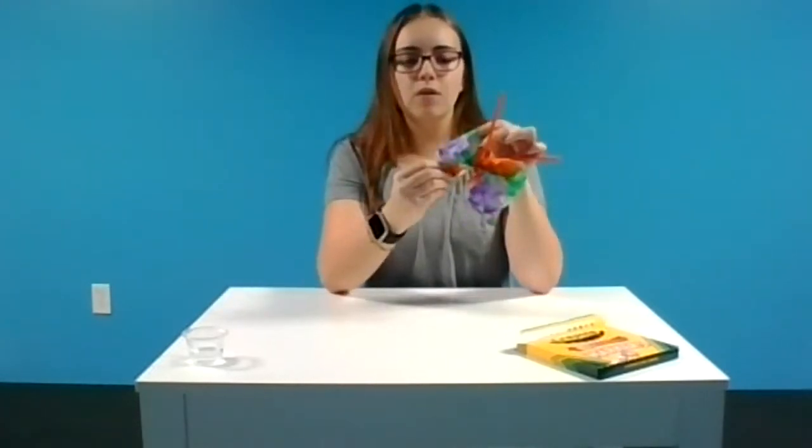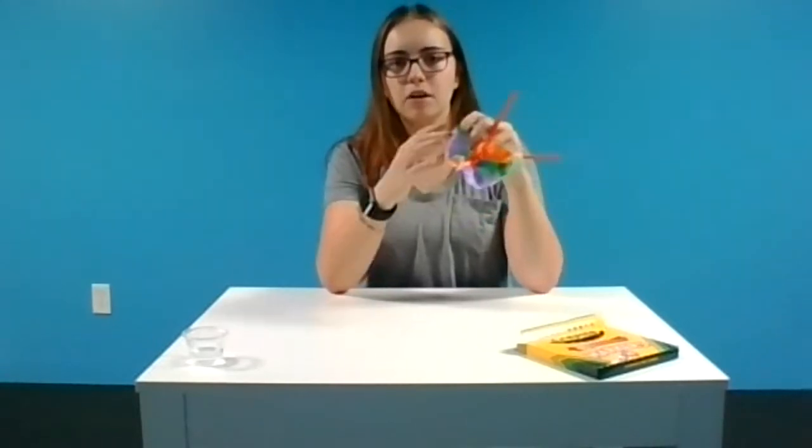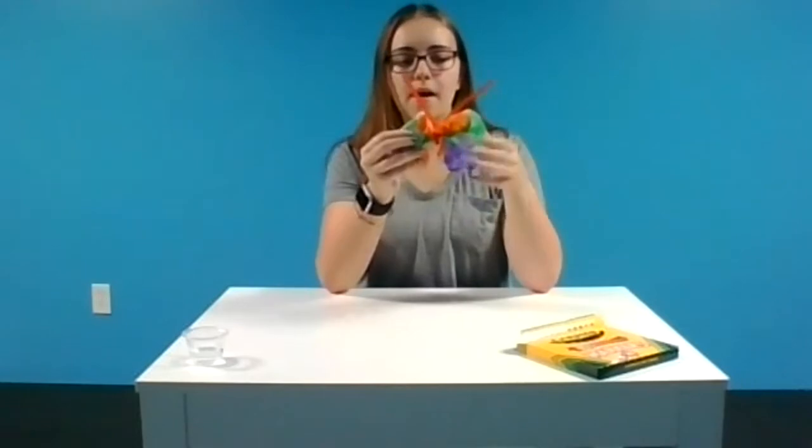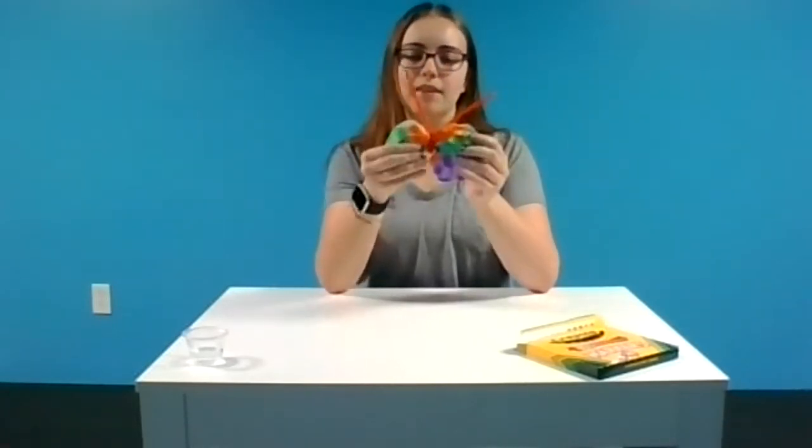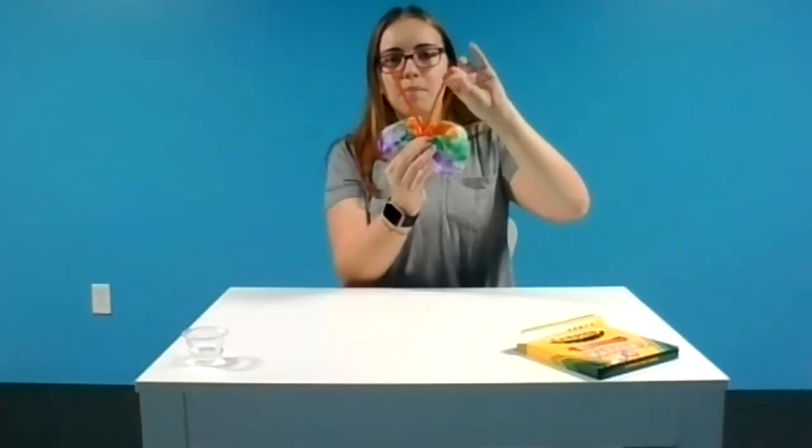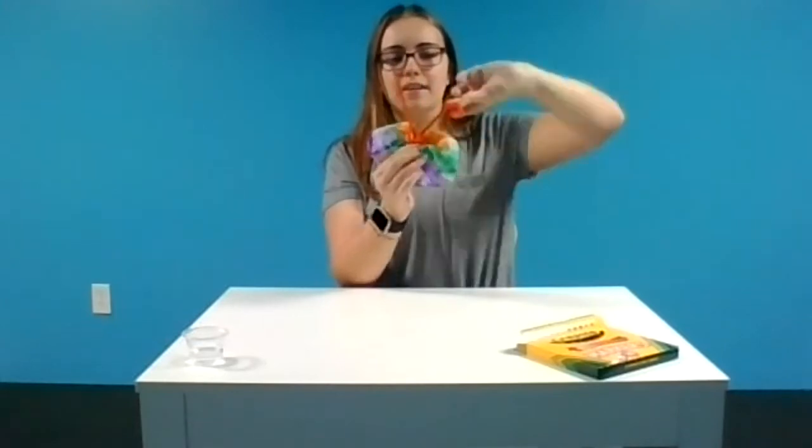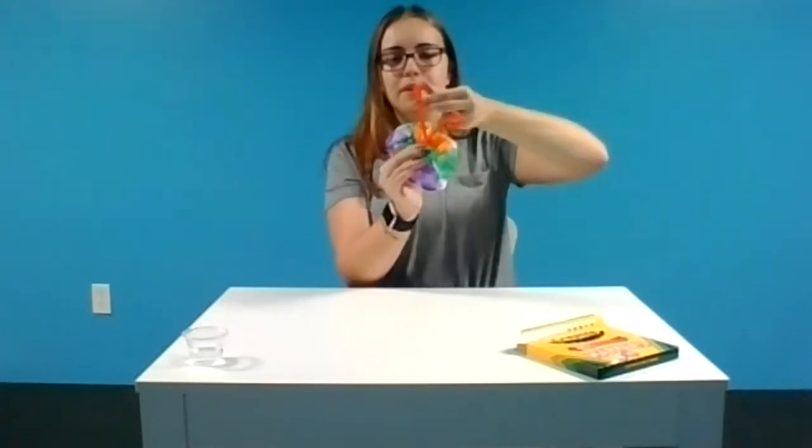Now you can kind of fold out the wings however you want. So you can kind of have them curve. You can crumple them up. You can make your butterfly look however you would like. Then the last thing we're going to do is we're going to make our antennas. So we're just going to kind of curl the end of our pipe cleaner.